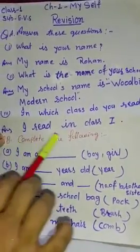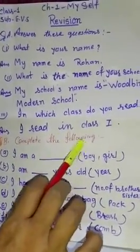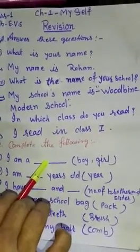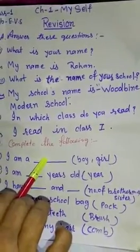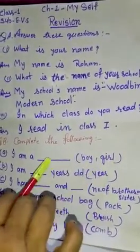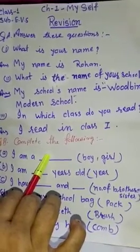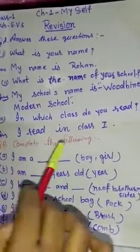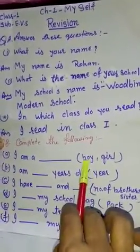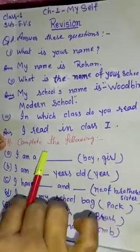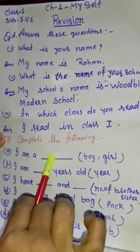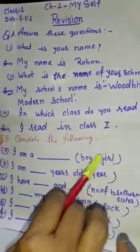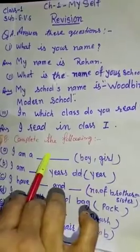Complete the following. इसको आपको इस blank में से word choose करके भरना है. Question A: I am a ___. बच्चों आप boy हैं या girl हैं? इसमें आपको वही लिखना है — boy हैं या girl हैं वही इसमें लिखना है.